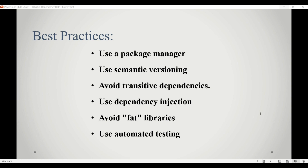Use automated testing. Automated testing can help catch compatibility issues and conflicts before they become a problem in production. By running tests that cover different configurations and combinations of dependencies, developers can catch issues early and avoid the dependency hell.